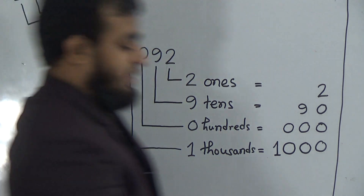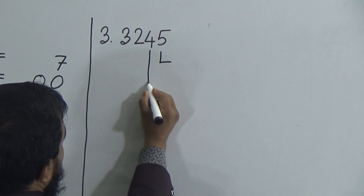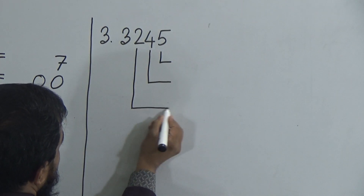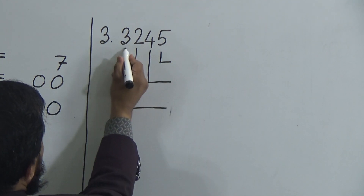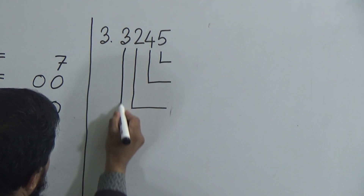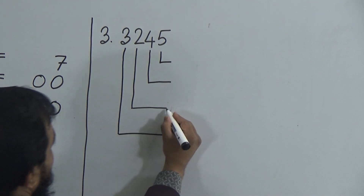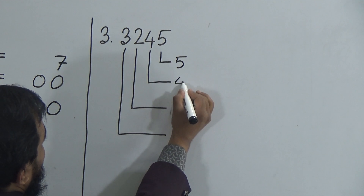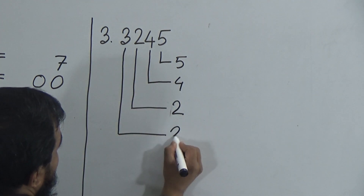Now the last one is number 3. My dear students, look. First draw the lines, and give this space to write down the words. We need to write some words, that is why I am giving space here. Write down the numbers: this is 5, this is 4, it is 2, and this indicates 3.